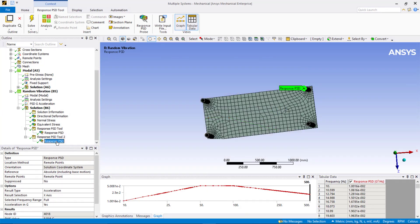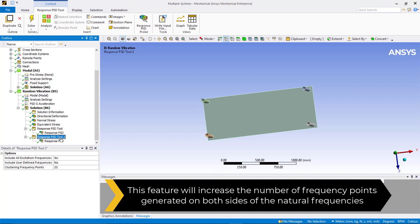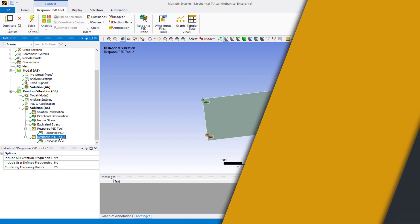To obtain more accurate RMS results, we can increase the clustering frequency points. This feature will increase the number of frequencies generated for both sides of the natural frequencies for the response PSD results evaluation. This completes the walkthrough example.